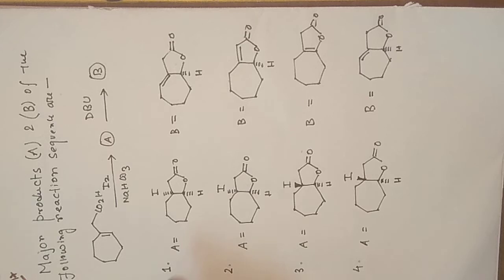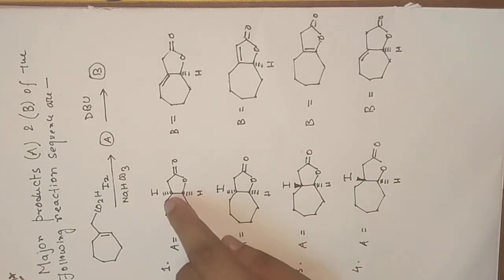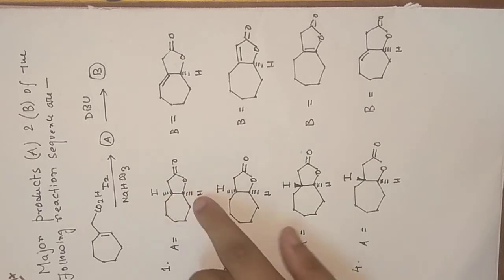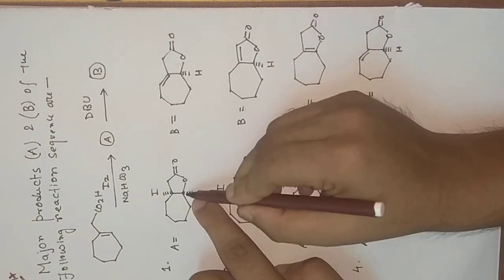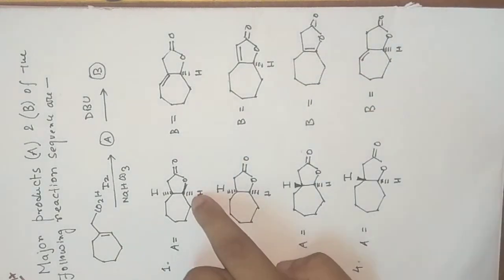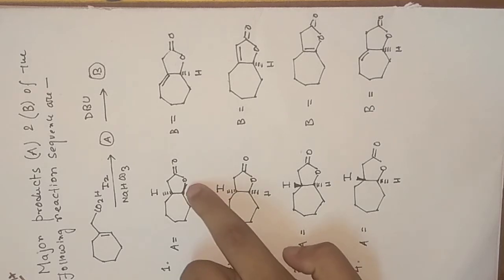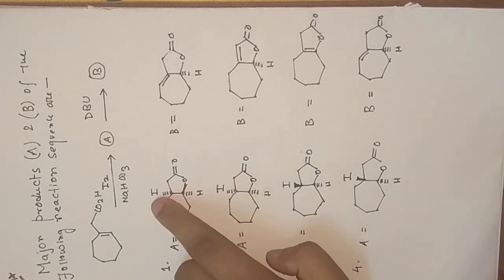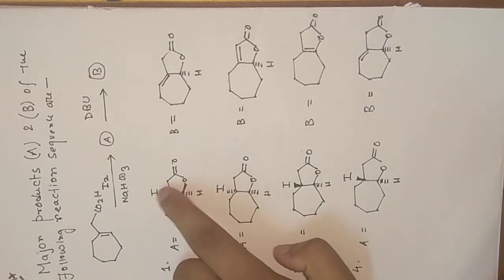Here we see that there is iodine which is below the plane and the corresponding hydrogen which is also below the plane. And since this group is above the plane, we see that one substituent is above the plane and one is below the plane. Since this product is a trans product.